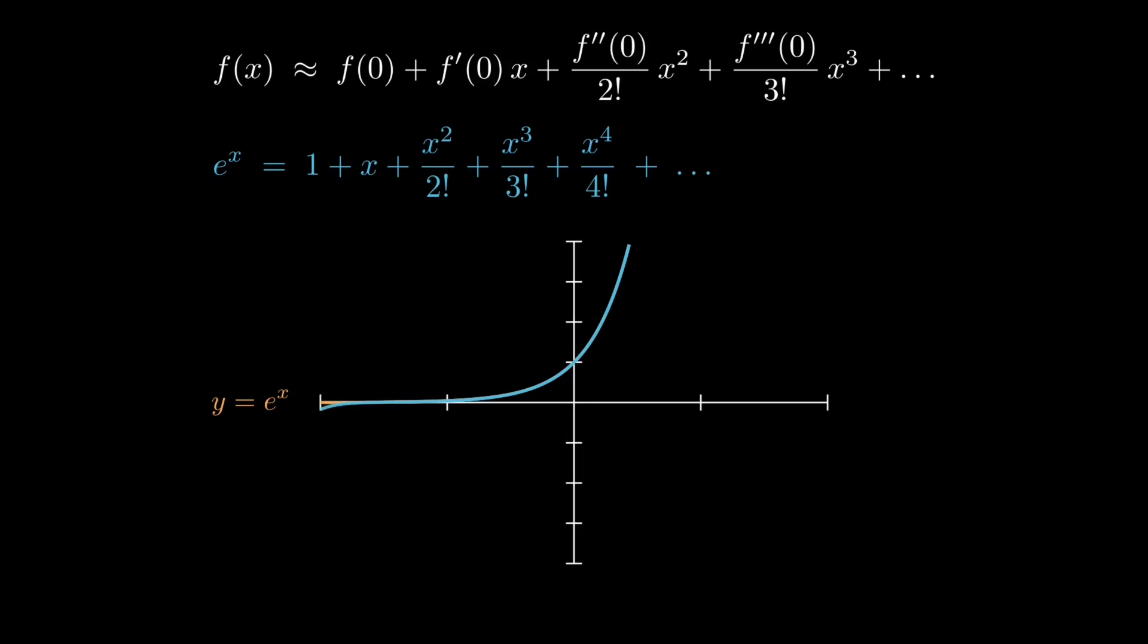Thus, whenever we simplify physics, whether it's gravity, oscillations or relativity, we are often using a Taylor series beneath the surface, revealing the structure behind the simplification.